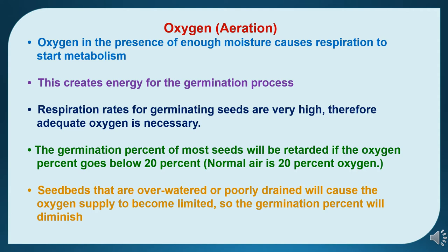Oxygen presence or aeration is another factor. Oxygen, in the presence of enough moisture, causes respiration to start metabolism and provides energy for the germination process. Respiration rates for germinating seeds are very high, so adequate oxygen is necessary. The germination percentage of most seeds will be retarded if the oxygen percent goes below 20 percent. Seed beds that are over-watered or poorly drained will cause the oxygen supply to become limited, diminishing germination. Optimum irrigation conditions should be maintained and flooding avoided.